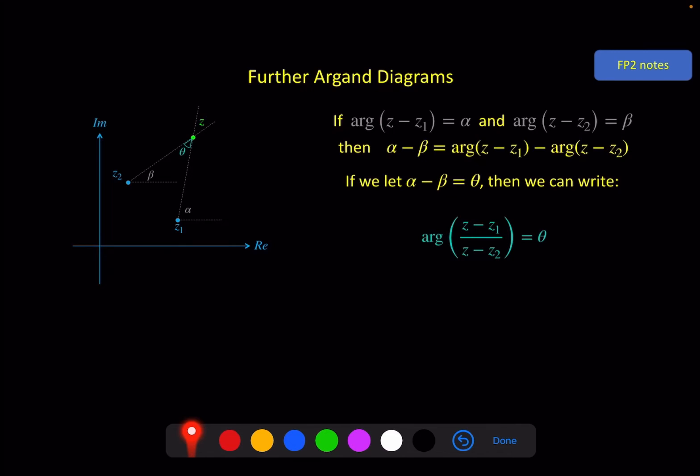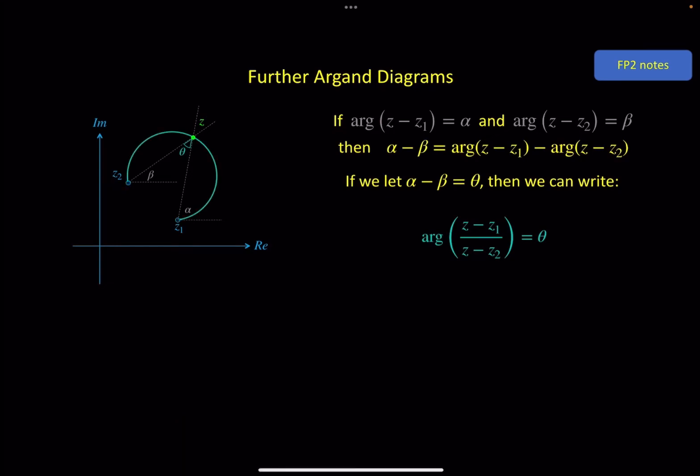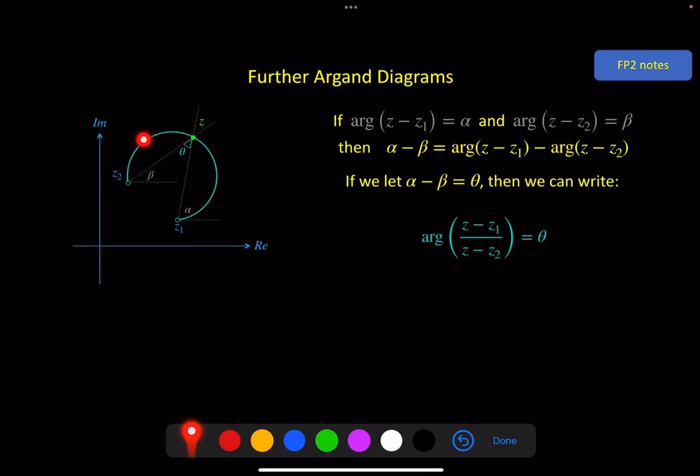Which means we have to ask ourselves, if z can vary, but z1, z2, and theta are all fixed, what different points could z take? And the answer to that links back with some of your GCSE work on circle theorems. Because if we have an arc from z1 to z2, you know that all the angles on the arc made from z1 and z2 are equal. And that's how we get our constant theta.